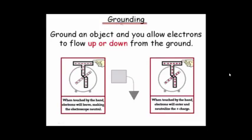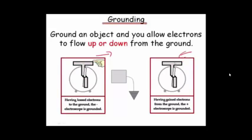When it comes to moving electrons, we often do something called grounding. When you ground an object, you're basically allowing electrons to either leave or to enter, literally from the ground.